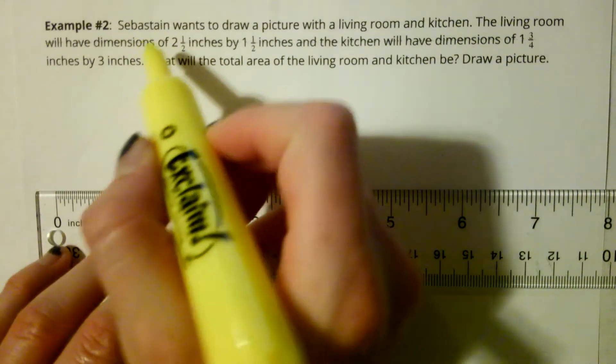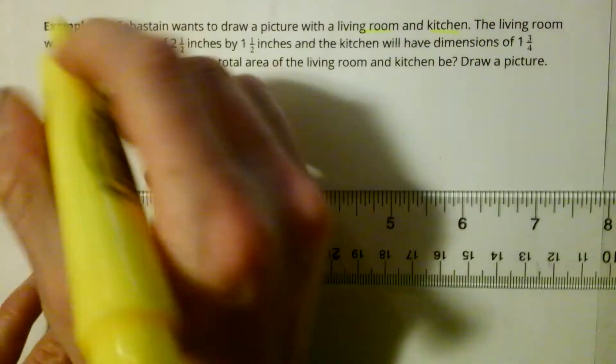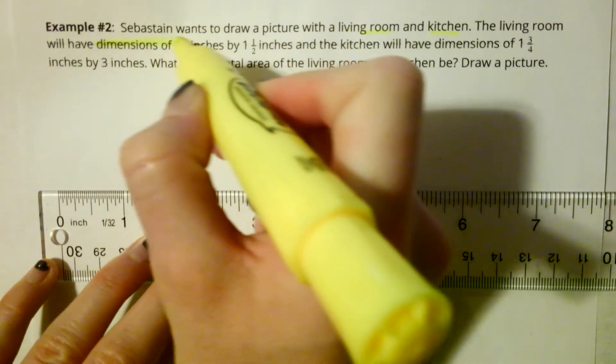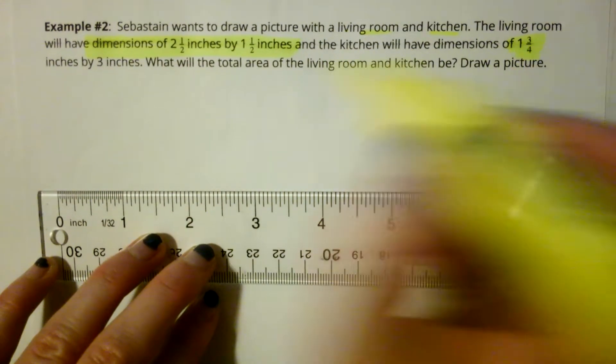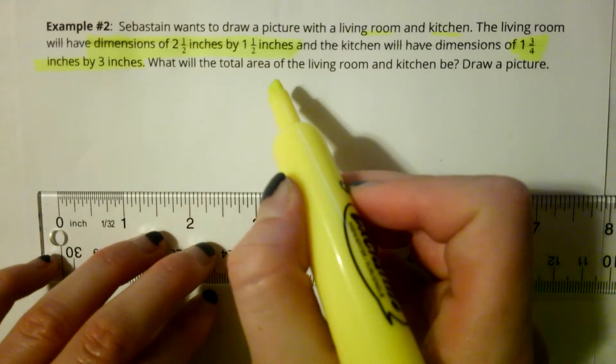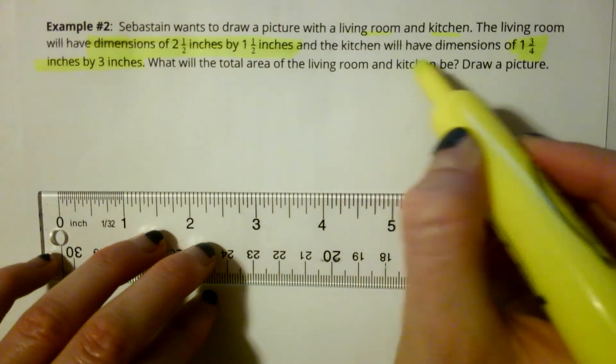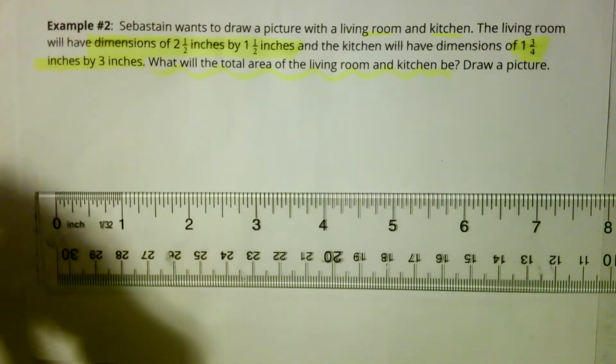Example two, Sebastian wants to draw a picture with a living room and a kitchen. The living room will have dimensions of two and a half inches by one and a half inches, and the kitchen will have dimensions of one and three-fourths inches by three inches. What will the total area of the living room and kitchen be? That's my question.